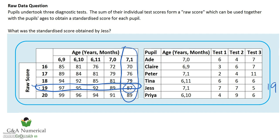Jess's standardized score is going to be 87, and it's as simple as that. Sometimes it is as simple as that. Other questions students have been asked are a bit harder — for example, what was the range of standardized test scores? That takes a bit more effort because we have to consider not just one pupil but all the different pupils, work out all their standardized scores, and then calculate the range. So let's do that while we're here, starting with ADE.